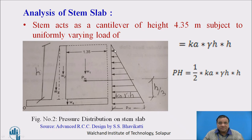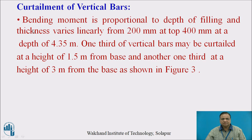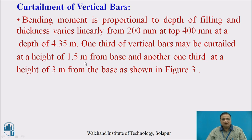In the pressure diagram, pressure at the top is zero and at the bottom is k times gamma times H. The maximum bending moment reduces as we go towards the top, reaching zero at the top. Therefore the steel reinforcement provided is to be curtailed. Bending moment is proportional to the depth of filling, and the thickness varies linearly from 200 mm at top to 400 mm at the bottom of the stem at 4.35 meters. One third of the vertical bars may be curtailed at a height of 1.5 meters from the base, and another one third at a height of 3 meters from the base, as shown in figure 3.